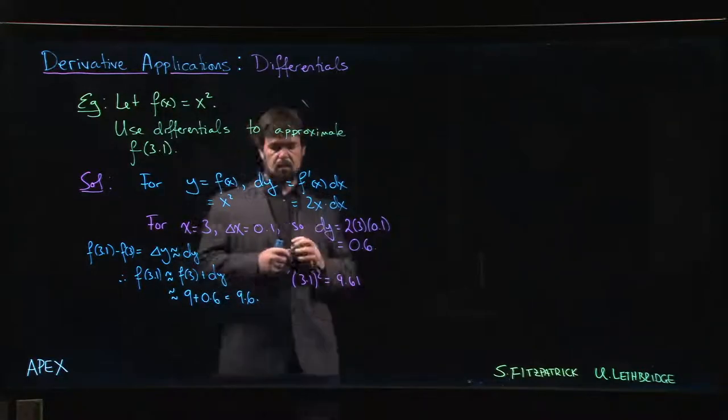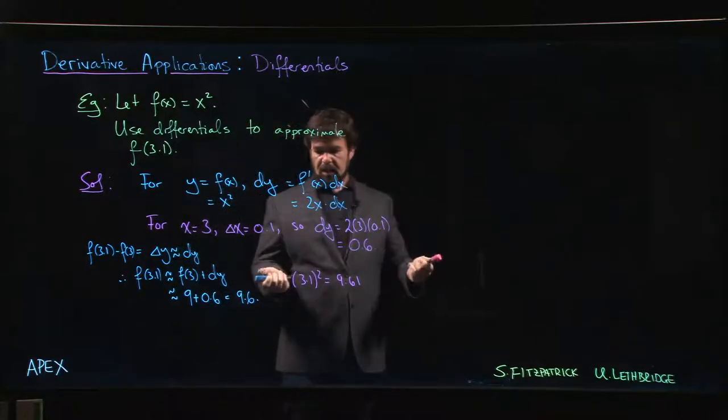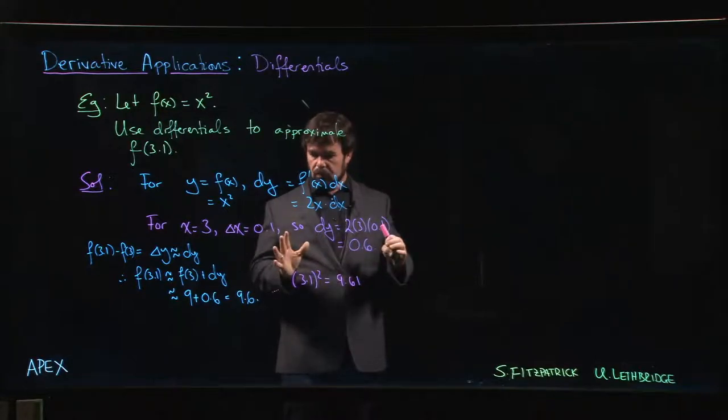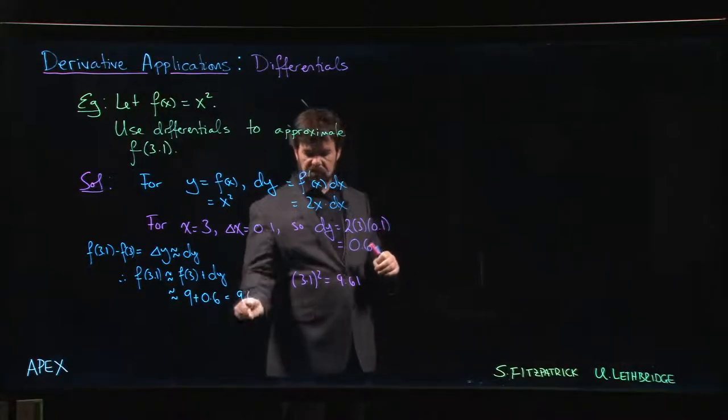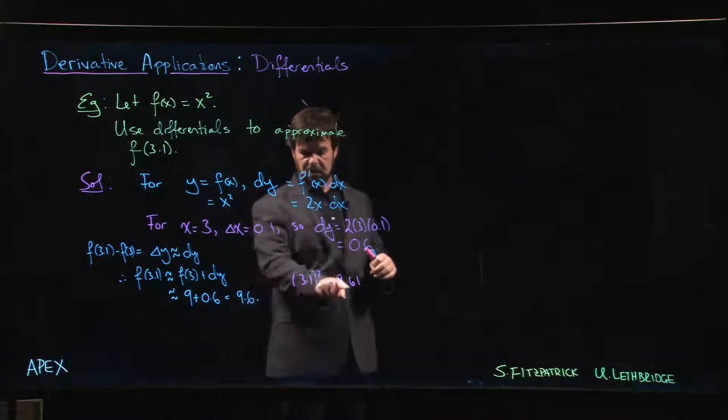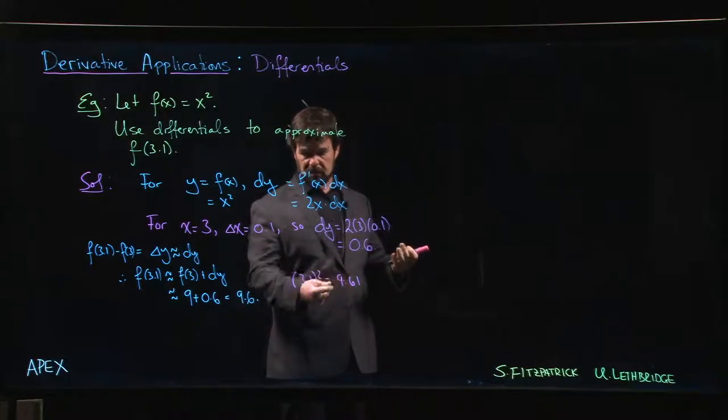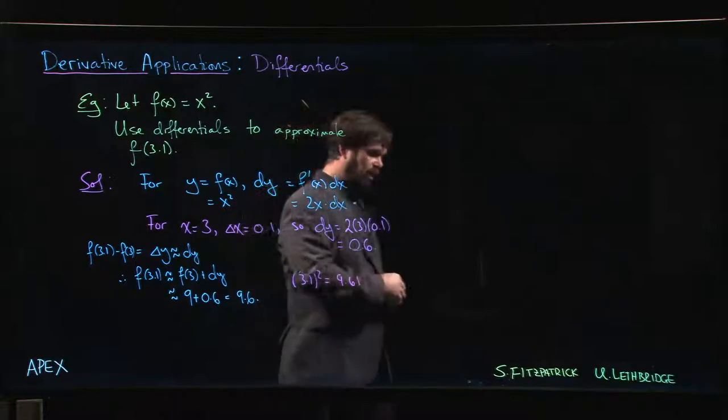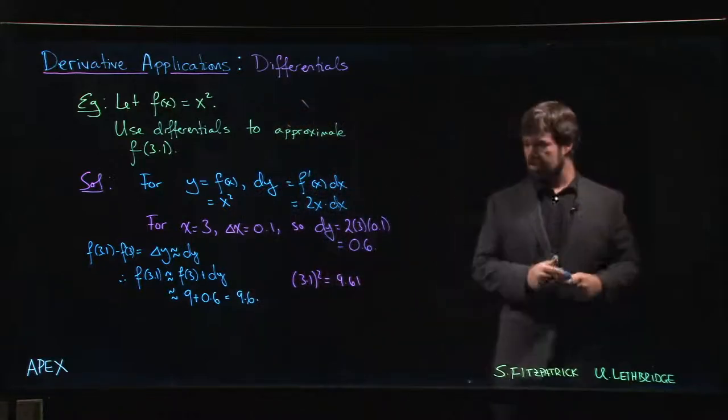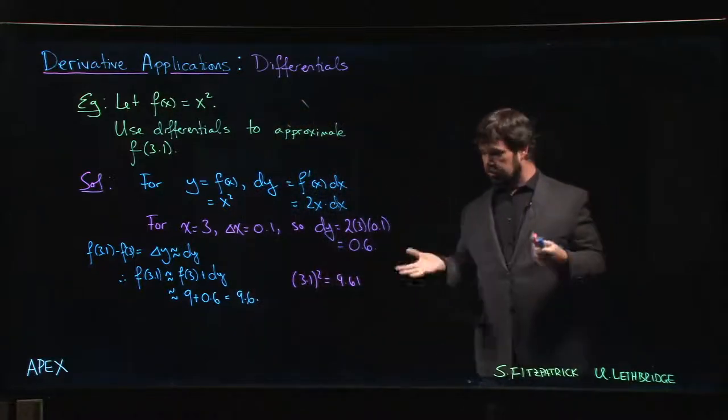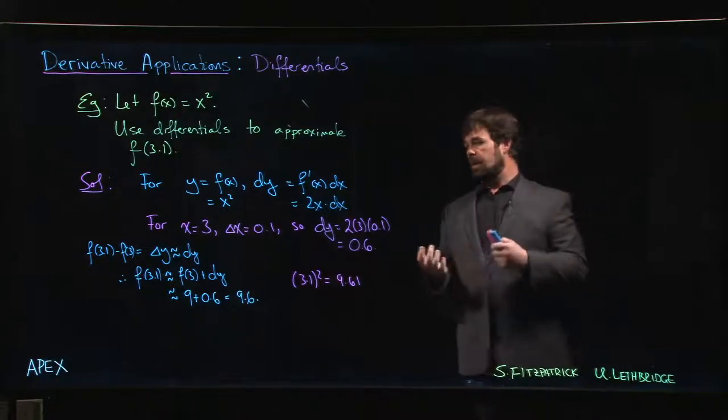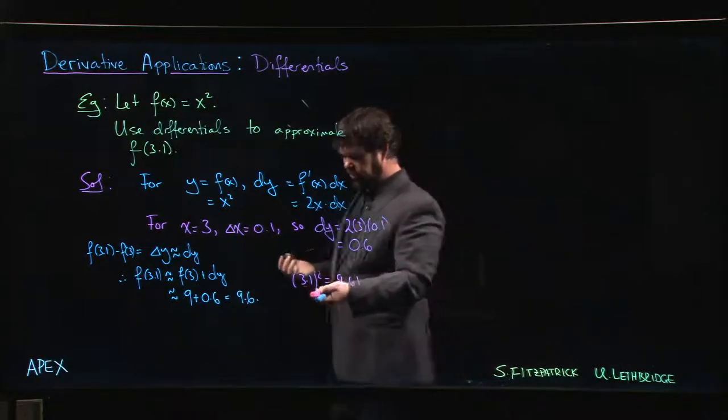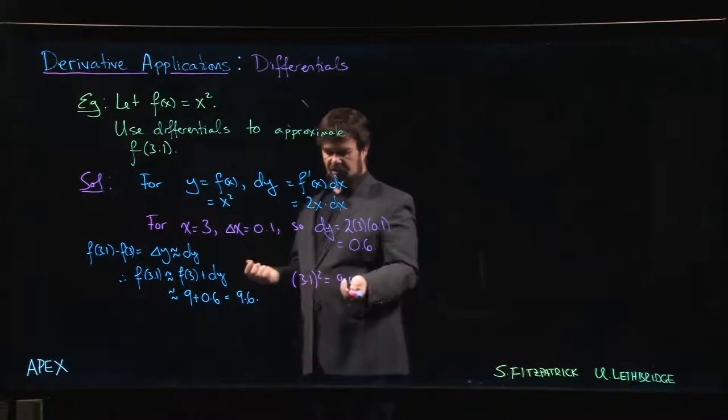We're off by 0.01, and for a lot of applications, off by 0.01 is probably good enough, so we live with it. This is an example where the calculation is not so bad, but what if your function was something like a cube root?